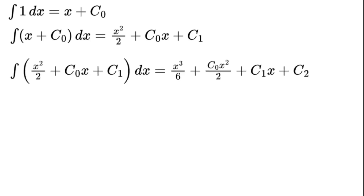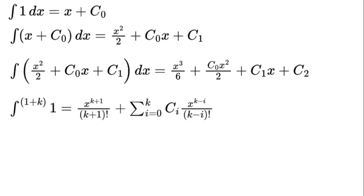Third, the integral of (x squared over 2 plus c₀ times x plus c₁) dx equals x cubed over 6 plus c₀ times x squared over 2 plus c₁ times x plus c₂. In general, the integral of 1 to the power of 1 plus k equals x to the power of k plus 1 over (k plus 1) factorial plus the sum from i equals 0 to k of cᵢ times x to the power of k minus i over (k minus i) factorial.